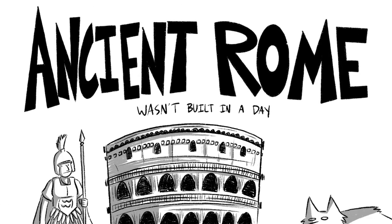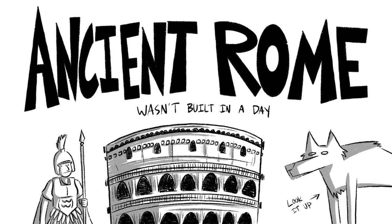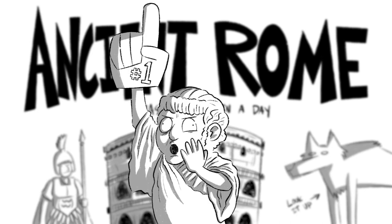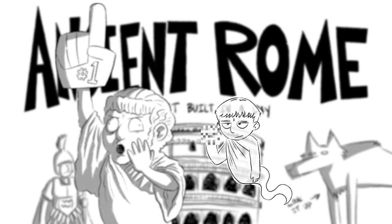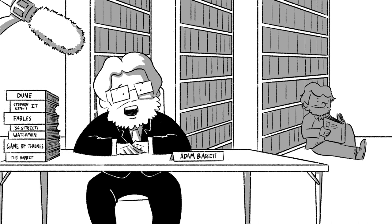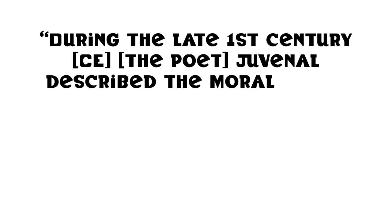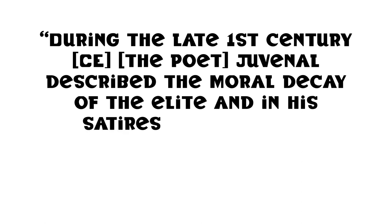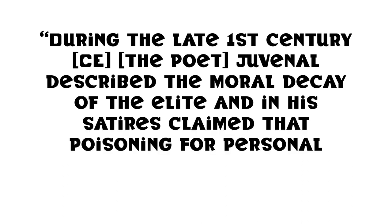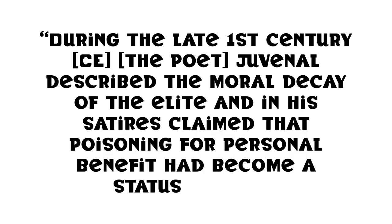Some of the most interesting cases of poisonings come from ancient Rome, where it became the preferred way to get rid of political rivals. Emperor Nero was a big fan — his half-brother Britannicus, not so much. And that only scratches the surface. Francois Purity and Luis Siliers wrote that during the late first century CE, the poet Geneviel described the moral decay of the elite, claiming poisoning for personal benefit had become a status symbol.